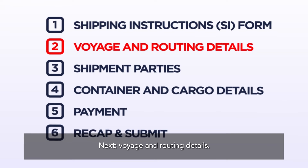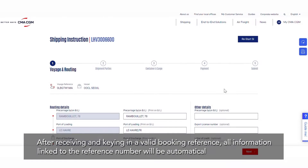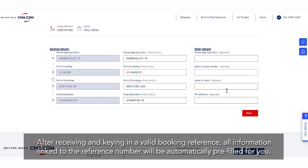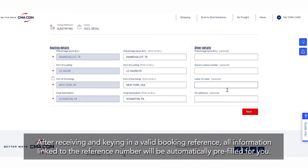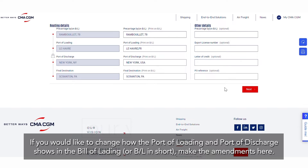Next, Voyage and Routing Details. Here you will learn how to manage your shipment's voyage and routing details. After receiving and keying in a valid booking reference, all information linked to the reference number will be automatically pre-filled for you. If you would like to change how the port of loading and port of discharge shows in the Bill of Lading, or BL in short, make the amendments here.